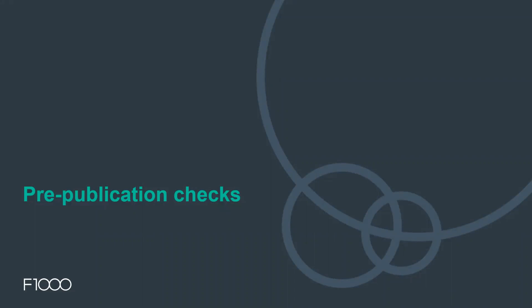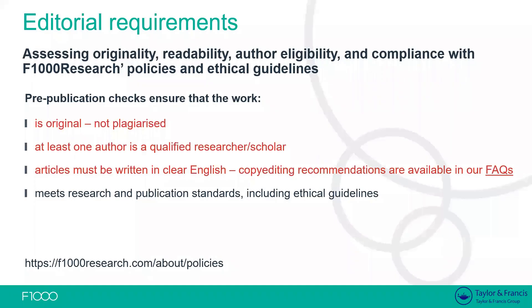Moving on to the specific pre-publication checks that we do. For an article to be published, it must pass our in-house editorial checks before it can be published and go through peer review. These are the points our editorial team look for to ensure the article is eligible to be published. First, the article must be original — it can't be plagiarized, and it can't have high levels of overlap in the text. We have a program to determine that.